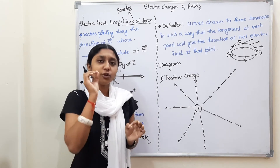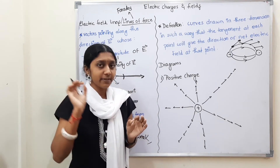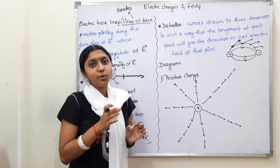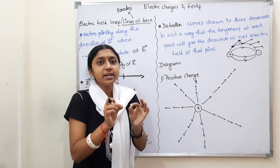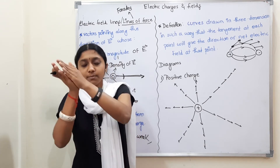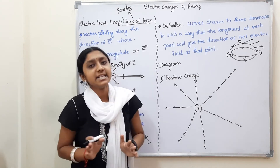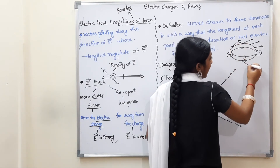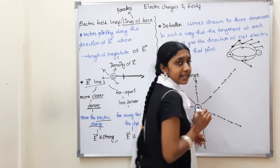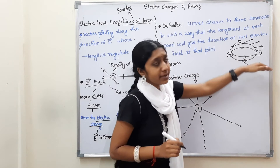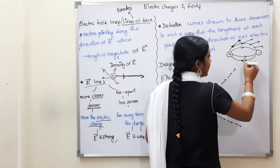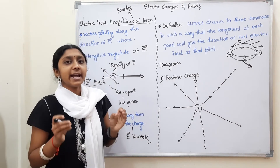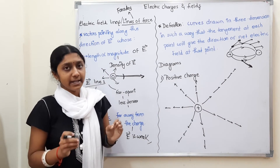In that 3D curve, you take a point and draw a tangent. The direction of the tangent at that point gives the direction of the electric field there. For example, if the net electric field is in a certain direction, the tangent to the field line at that point will point in that same direction.